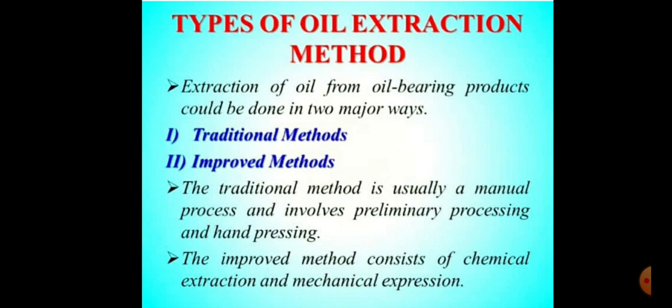What are the types of oil extraction methods? The extraction of oil from oil-bearing products could be done in two major ways: the first is the traditional method and the second is the improved method. The traditional method is usually a manual process involving preliminary processing and hand pressing, with animal energy also invested. The improved method consists of chemical extraction and other improved methods.